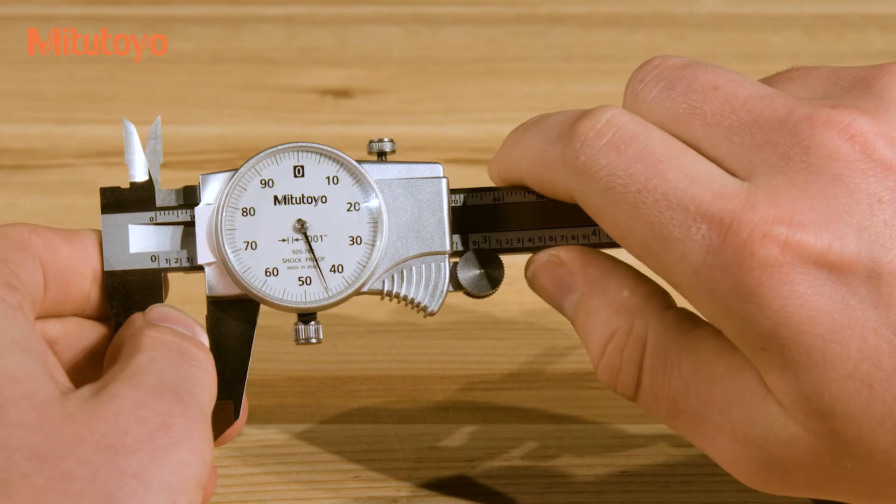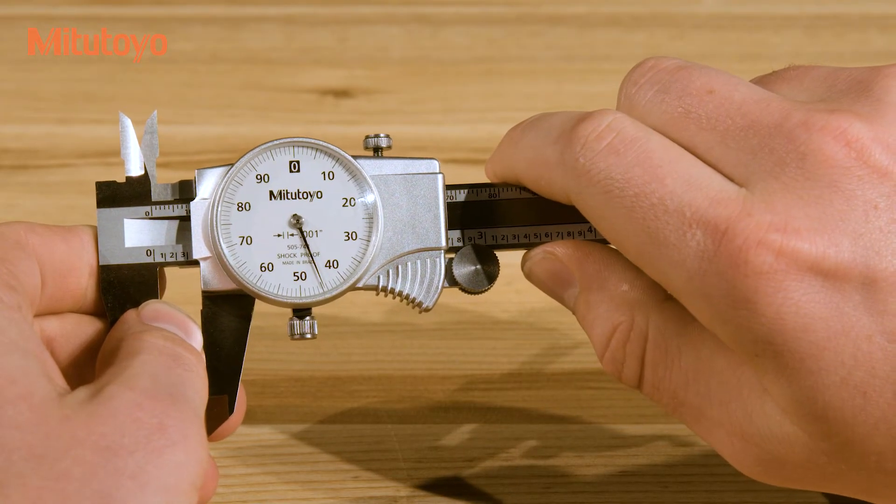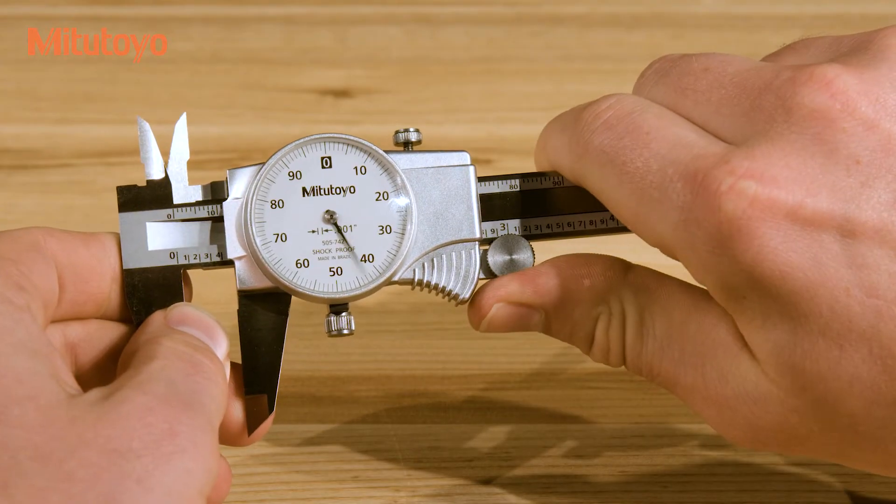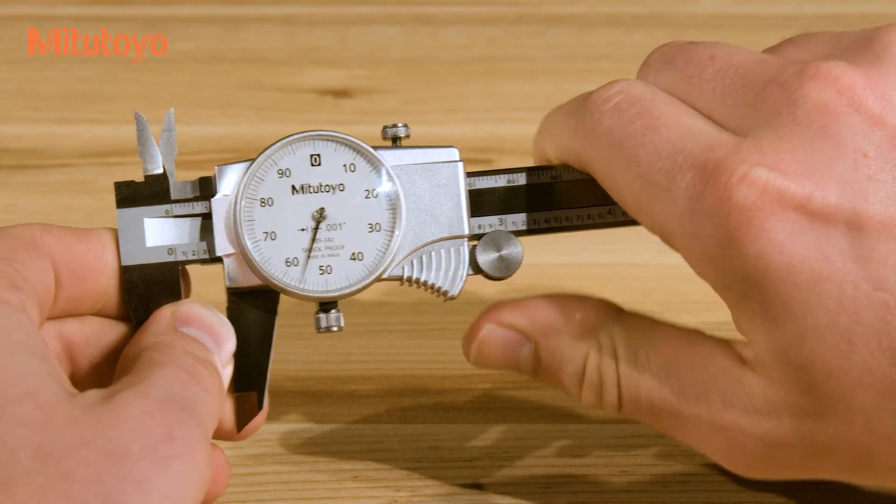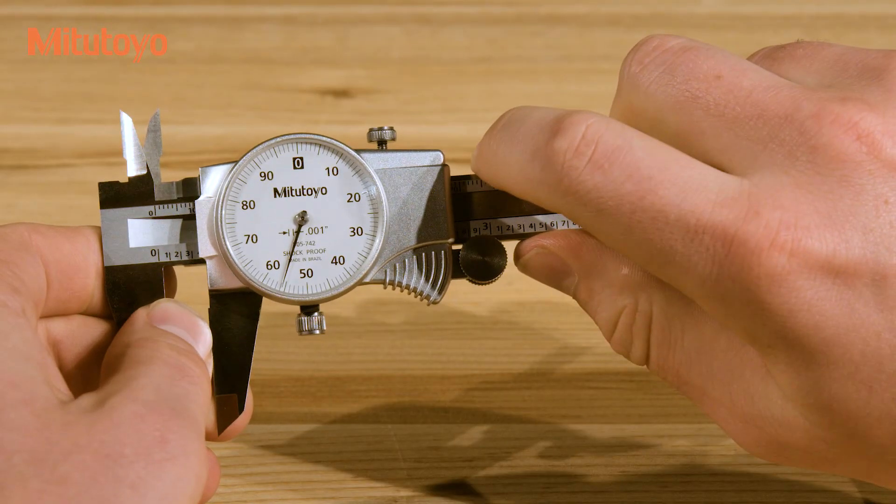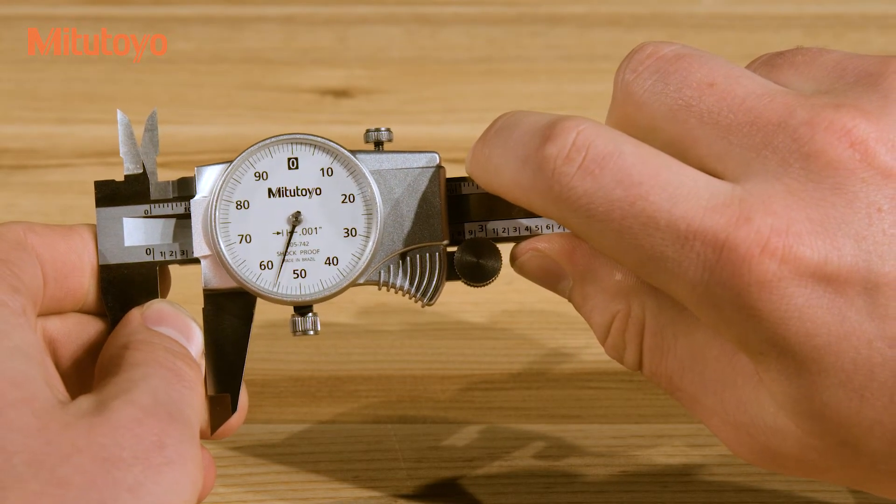If there's confusion about whether or not a graduation has been passed, note that the value on the dial increases as the caliper opens. So, if the value is high, then the graduation has not yet been passed, and if the value is low, it has just been passed.